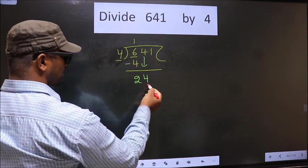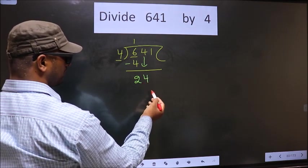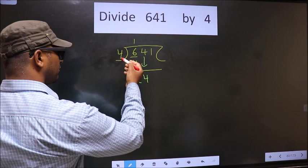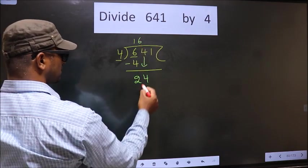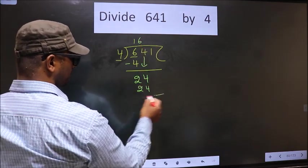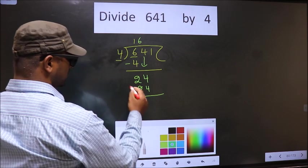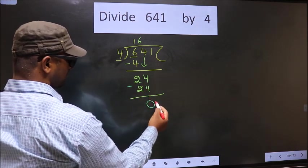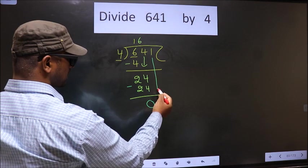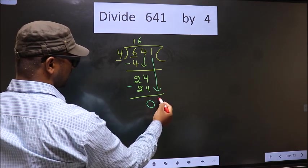Now you bring down the beside number. So 4 down. Now here we have 24. When do we get 24 in 4 table? 4, 6, 24. Now you subtract. 24 minus 24, 0. Now you bring down the beside number. So 1 down.